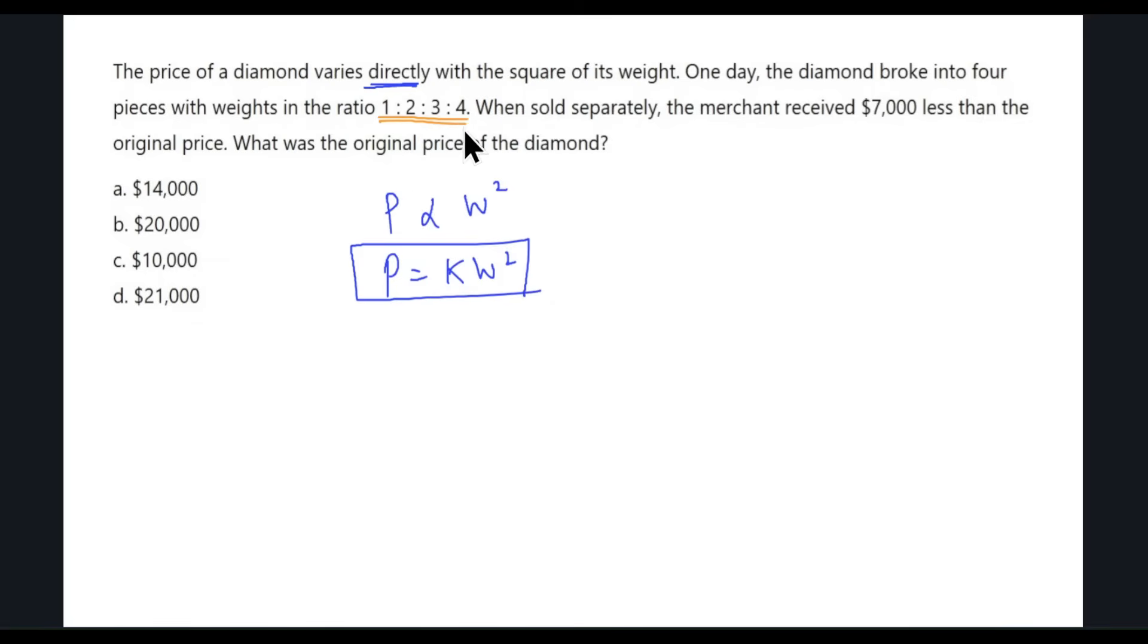Since this is the ratio in which the diamond broke, let's say the pieces individually weigh X, 2X, 3X, and 4X. So what is the total weight now? That makes it 10X.